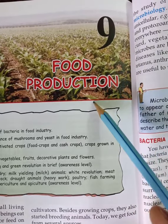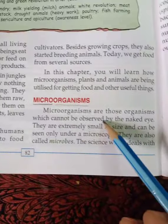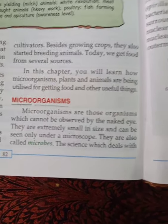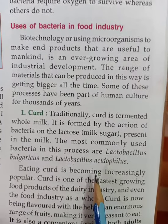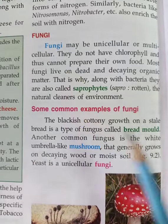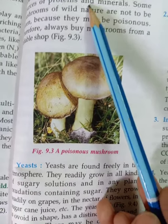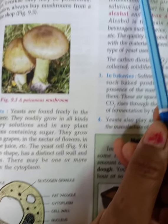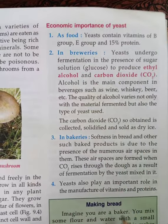In this chapter on Food Production, in the first lecture we discussed microorganisms, then bacteria, and the uses of bacteria in food industries. After that we discussed fungi, common examples of fungi such as mushroom and yeast, and the economic importance of yeast.